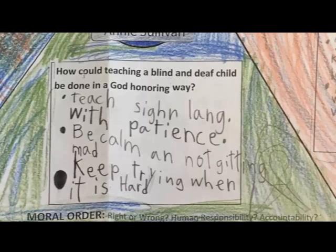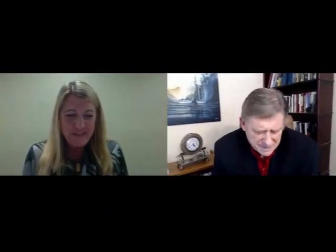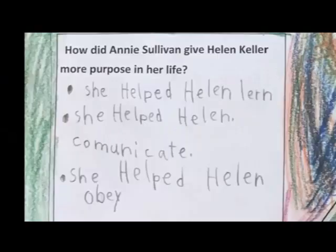They said they could teach sign language with patience. One wrote: 'Be calm and don't get mad.' Another said: 'Keep trying — if they don't understand some of the language, keep trying.' And by the way, it's a question they would never get in a state school because that's off limits. What you're doing is really peeling the onion — going down deep and grabbing hold of God's view of all of this. For the purpose area: How did Annie Sullivan give Helen Keller more purpose in her life?